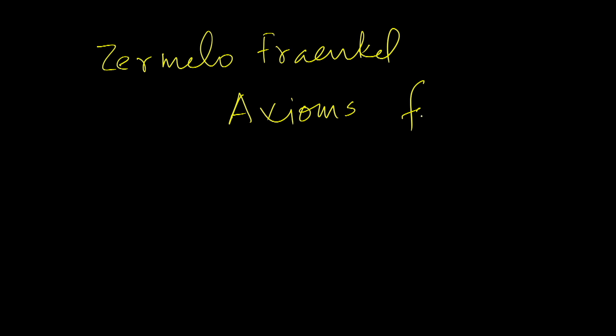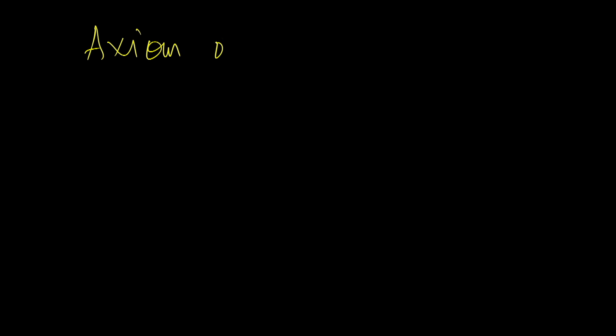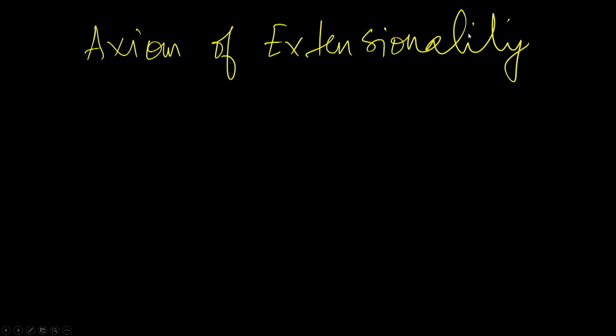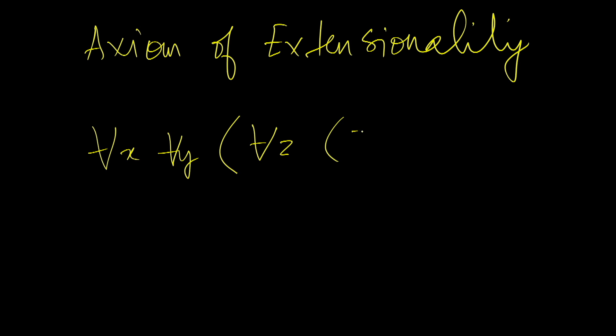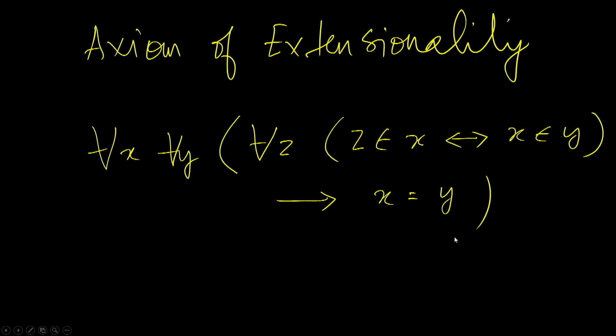The first axiom is the axiom of extensionality. The axiom of extensionality says that two sets are equal if and only if they have the same extensions. In other words, two sets have exactly the same members if and only if they are equal. Formally, for all x, for all y, for all z: z belongs to x if and only if z belongs to y, implies that x equals y.